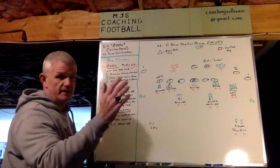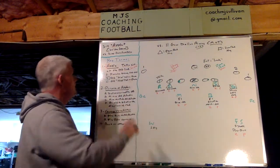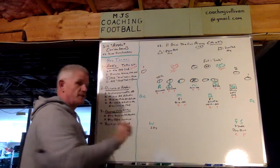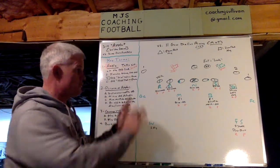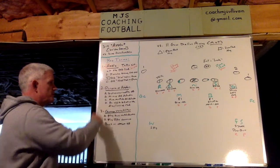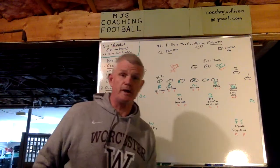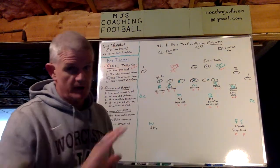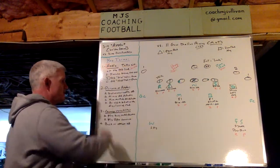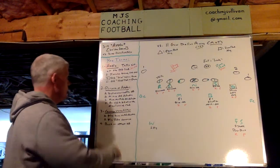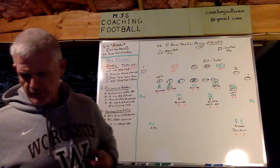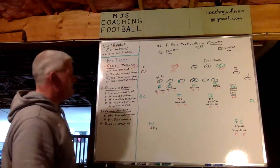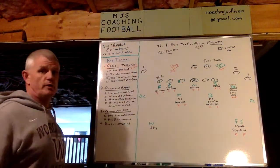Apple involves the D-line, inside and outside linebackers, as you will see. In zone read, the quarterback has a give read, but in power read he has a keep read. The purpose of Apple is we're going to determine the read for the quarterback. They can misread, but nonetheless we're determining it for the quarterback, not the other way around. We're going to mix up who the quarterback defenders are and have multiple quarterback defenders. We're going to be able to sell out on the dive — the inside part of the power read.